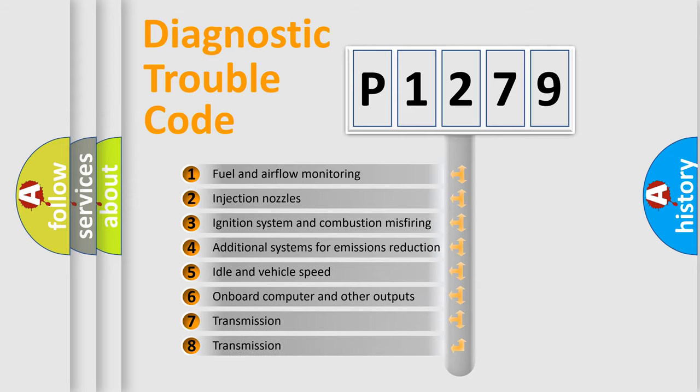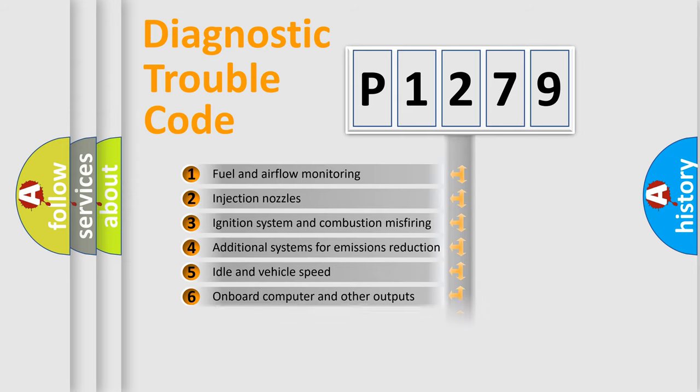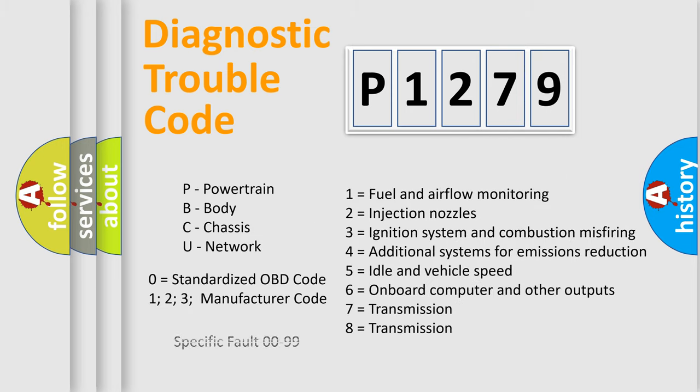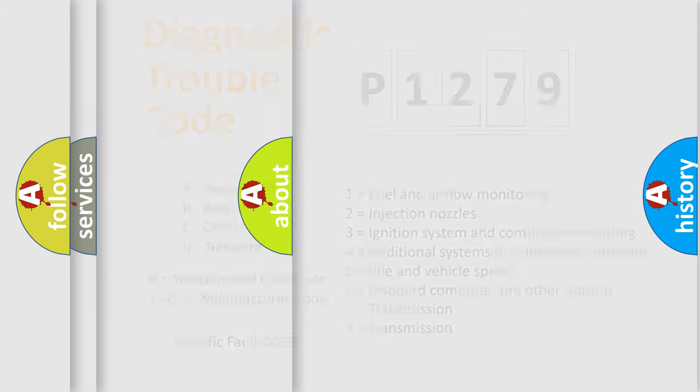The third character specifies a subset of errors. The distribution shown is valid only for the standardized DTC code. Only the last two characters define the specific fault of the group. Let's not forget that such a division is valid only if the second character code is expressed by the number zero.